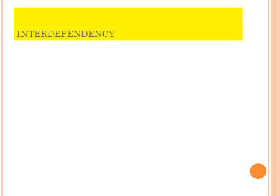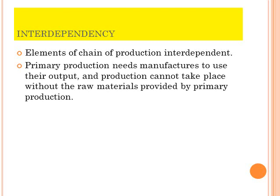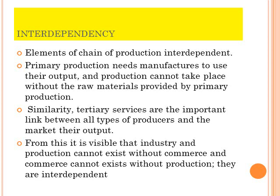With the levels of production, we next look at the concept of interdependency. Elements of the chain of production are interdependent. Primary production needs manufacturers to use their output, and production cannot take place without raw materials from primary production. Tertiary activities are the important link between all types of producers and the markets for their output. Industry and production cannot exist without commerce, and commerce cannot exist without production — they are interdependent. Without primary production, secondary production cannot happen; without primary and secondary production, tertiary activities cannot happen.